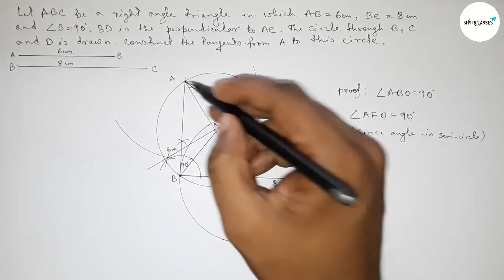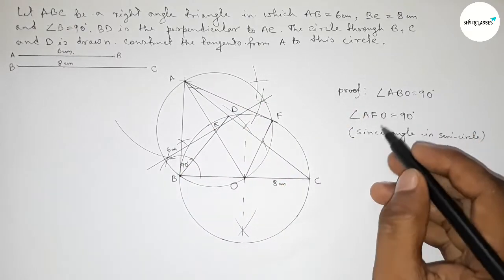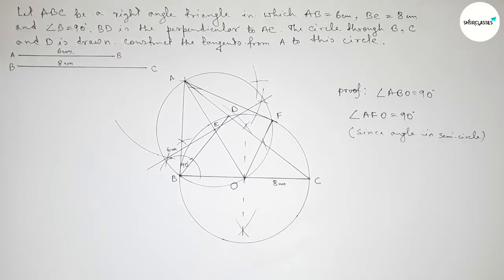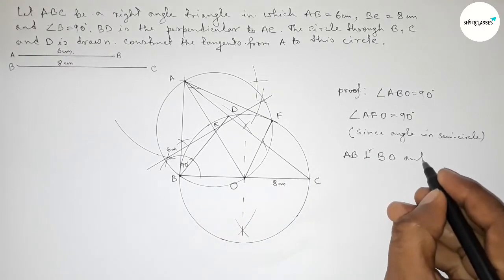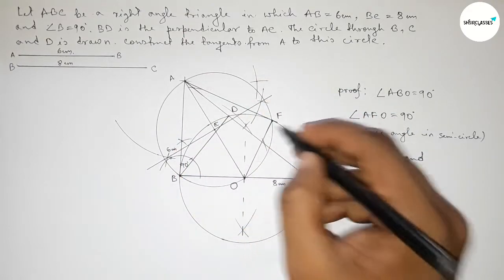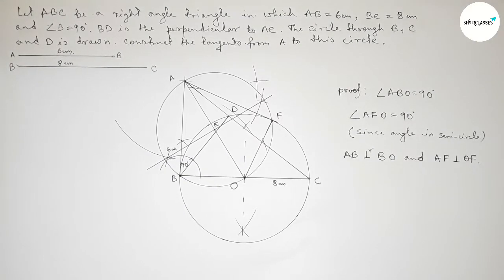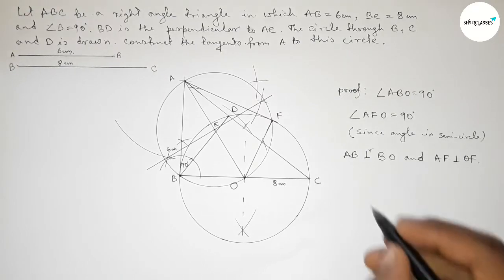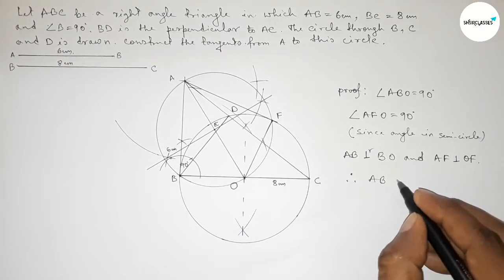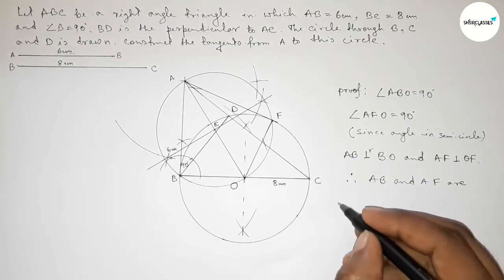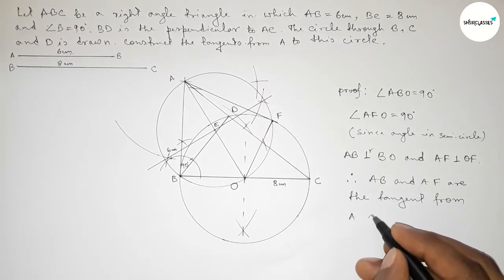Since angle ABO is in the semicircle, it is 90 degrees. Therefore, line AB is perpendicular to BO. Similarly, angle AFO equals 90 degrees, so line AF is perpendicular to FO. Hence, we can say that AB and AF are tangents from point A to the circle with radius OB and center O.